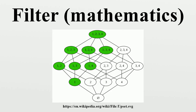For example, if X is an element of the poset, then the set of elements that are above X is a filter, called the principal filter at X. Similarly, a filter on a set contains those subsets that are sufficiently large to contain something. For example, if the set is the real line and X is one of its points, then the family of sets that contain X in their interior is a filter, called the filter of neighborhoods of X.